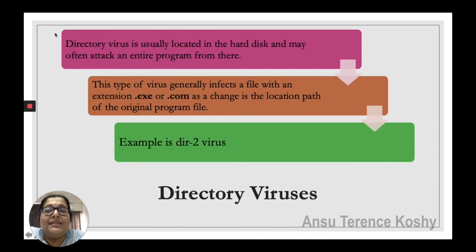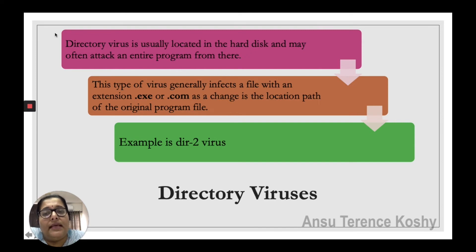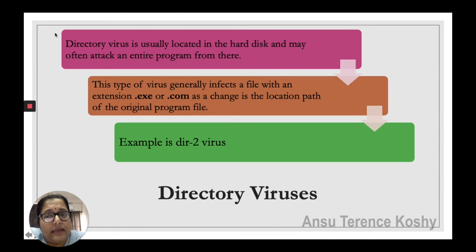Next is directory virus. A directory virus is usually located in the hard disk and may often attack an entire program from there. This type of virus generally infects files with the extension .exe or .com by changing the location path of the original program file — that is, it always attacks executable files present in the system. The example is the DIR2 virus.